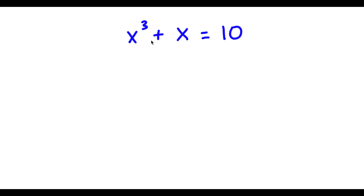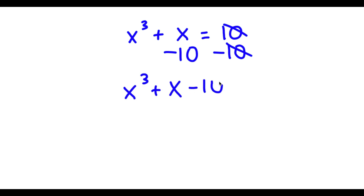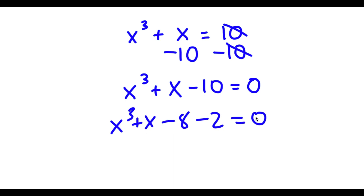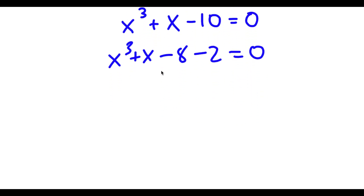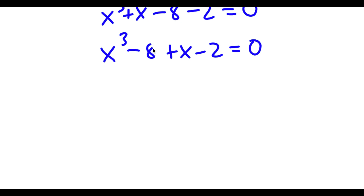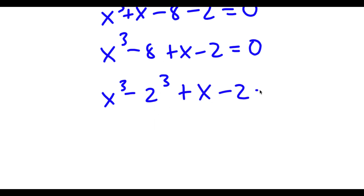In this problem, I have x to the power of 3 plus x is equal to 10. To solve this, I'm going to first subtract 10 from both sides. So now I have x cubed plus x minus 10 is equal to 0. Negative 10 is the same thing as negative 8 minus 2. So I can rewrite this as x cubed minus 8 plus x minus 2 equals 0. And 8 is the same as 2 to the power of 3, so I have x cubed minus 2 cubed plus x minus 2 equals 0.